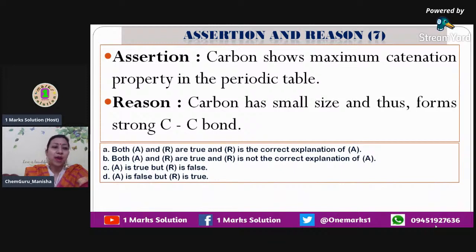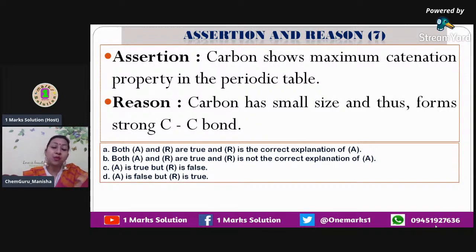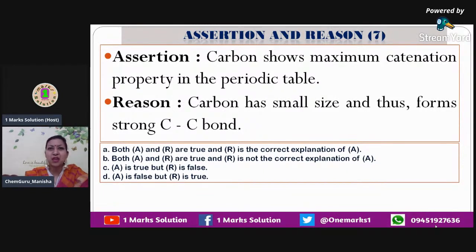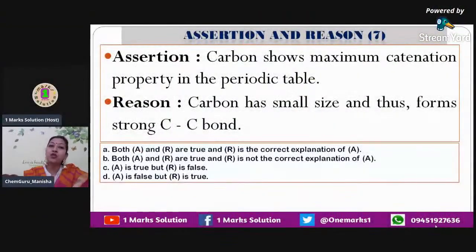Next statement: assertion says carbon shows maximum catenation property in the periodic table. Carbon can make rings, branches, and chains. Other elements like phosphorus and sulfur also show catenation, but carbon is maximum because its molecules have the maximum variety and amount. So our assertion is definitely correct.